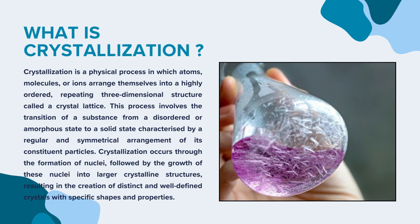Crystallization occurs first through the formation of nuclei, which is followed by the growth of these nuclei into larger crystalline substances. They then get bigger to create solid structures with clear shapes and specific properties.